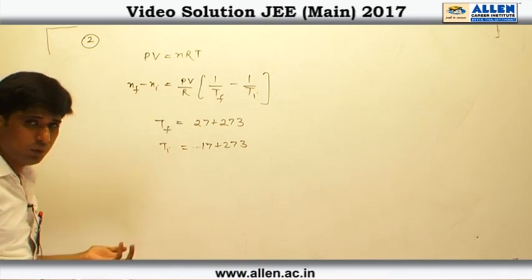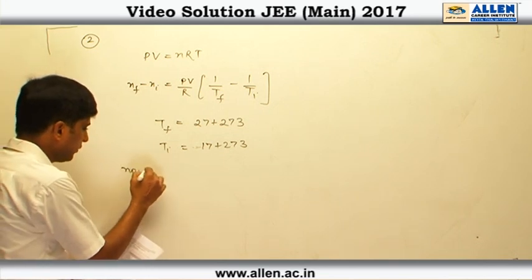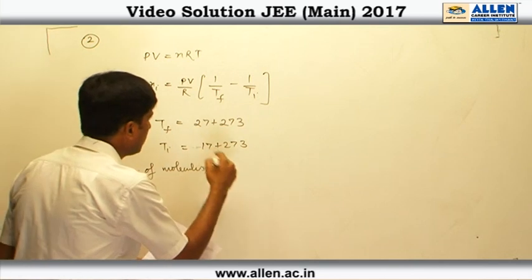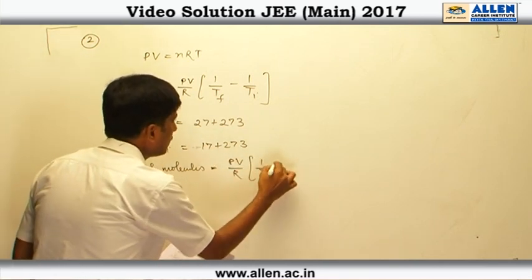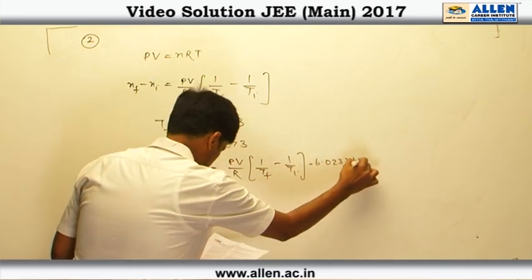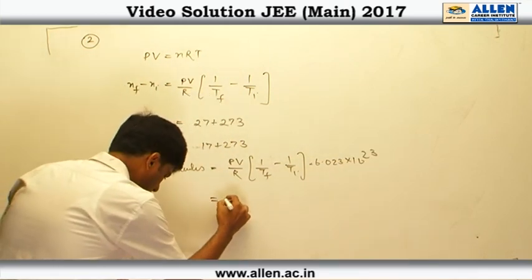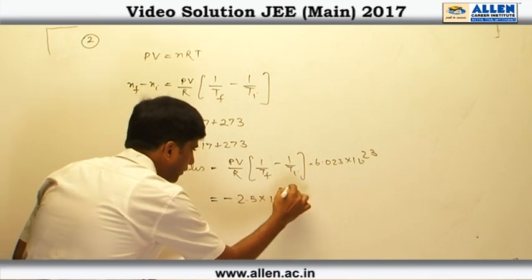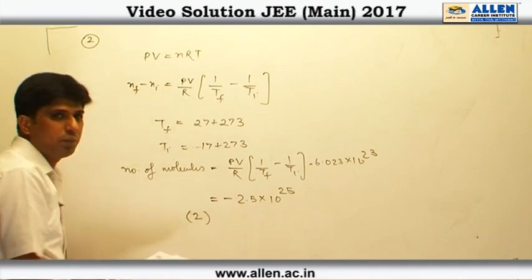To get the number of molecules we have to multiply by the Avogadro number. Therefore, number of molecules will be given by PV by R times 1 upon T final minus 1 upon T initial into 6.023 into 10 to power 23. From here we get the value as minus 2.5 into 10 to power 25. Therefore, the correct option is option number 2.